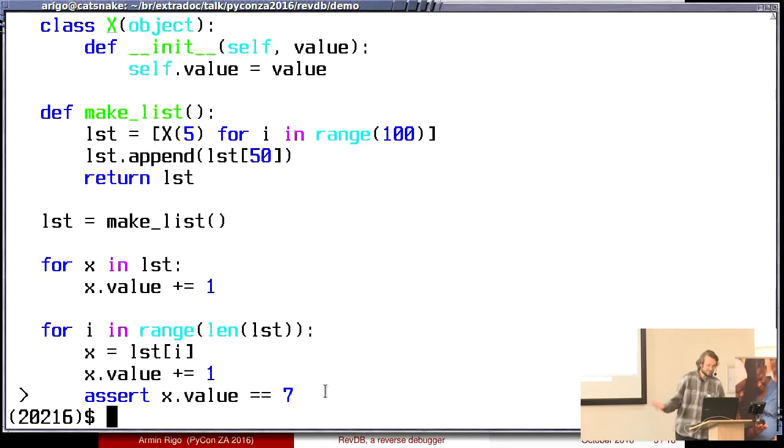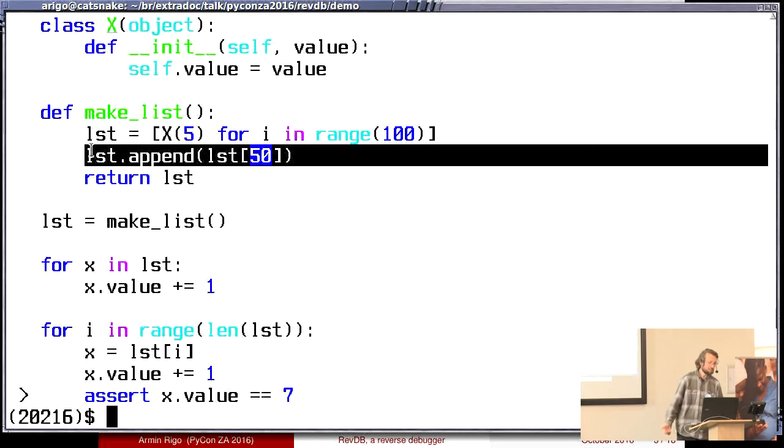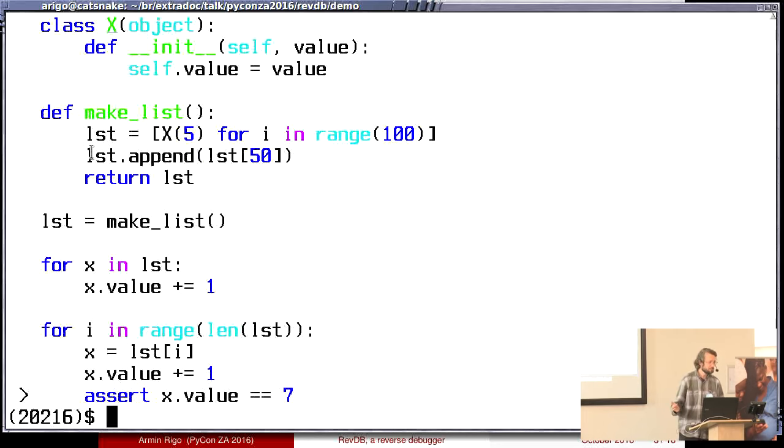And yes, as you have understood, no it will not because of this line. Because of this line, the list will actually contain the same object twice. So on this single object, this will be added twice. For this single object, this assert failed because it will see 8.